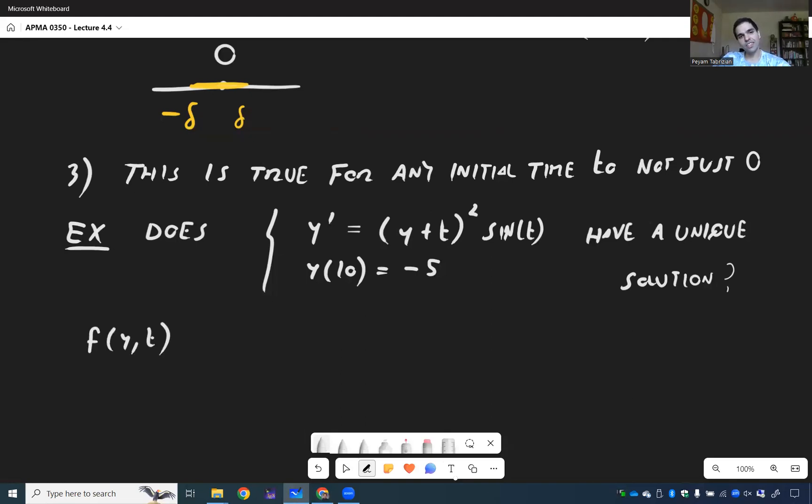So here, f of y,t is y plus t² sin(t). And by the way, you do not need to reprove the laws of calculus saying that sine of t is continuous or the product of continuous functions is continuous. Here, it is a continuous function and all you need to do is also calculate the partial derivative of f with respect to y.